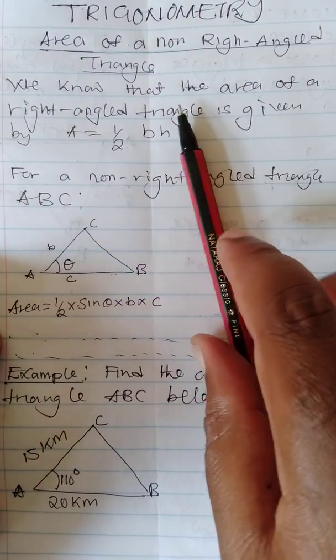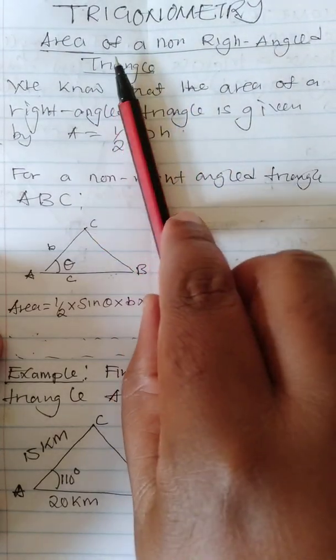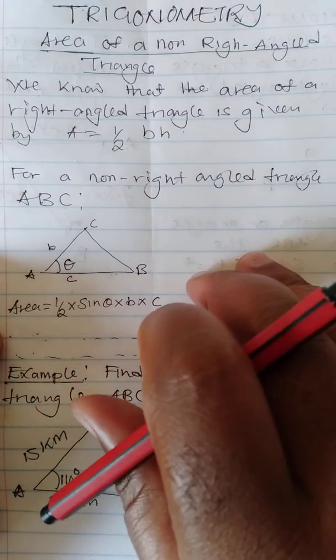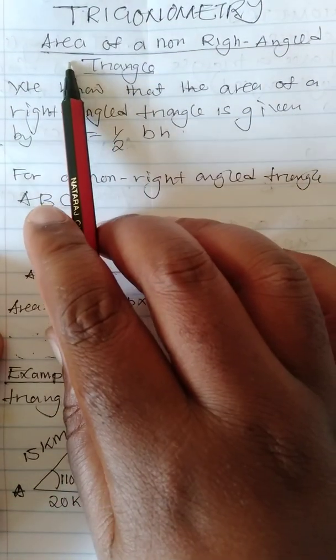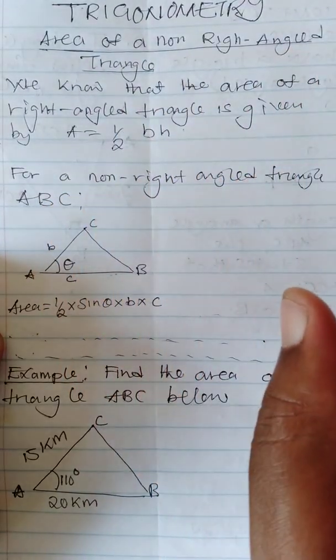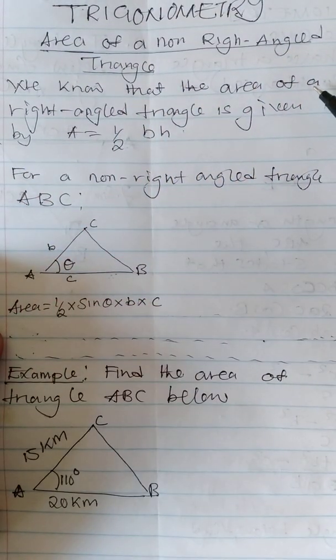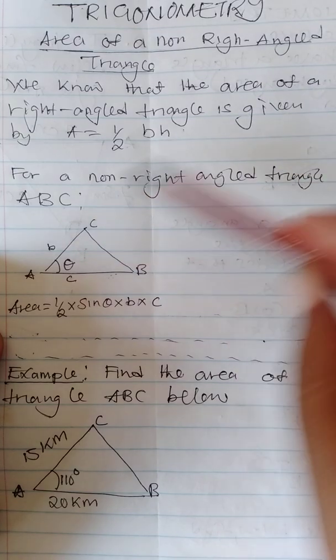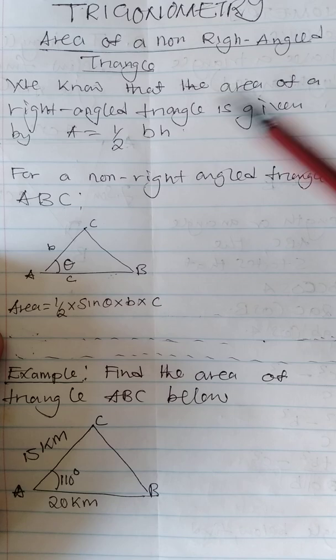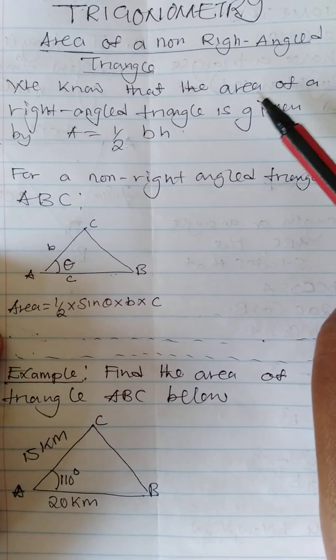In this presentation, we continue dealing with trigonometry. Our interest is to understand how we can get the area of a non-right-angled triangle, which is very easy. If you have had challenges, we are here to simplify things for you. This is the mathematics clinic; we are trying to cure this problem of mathematics.